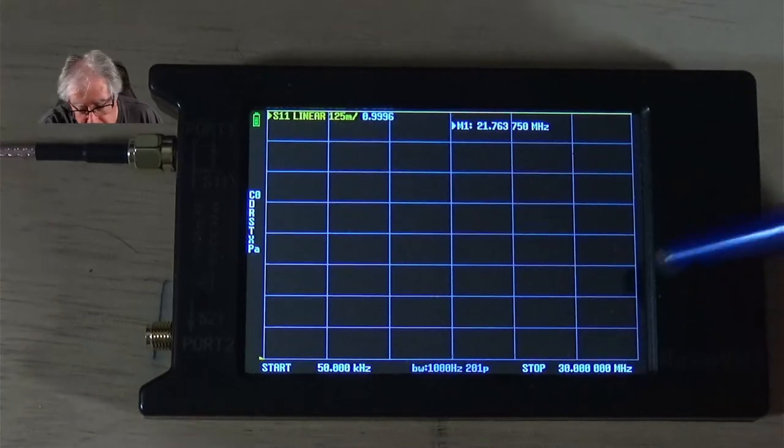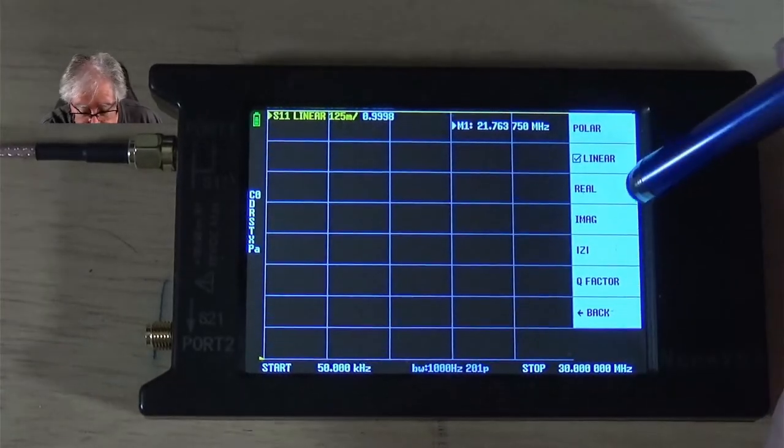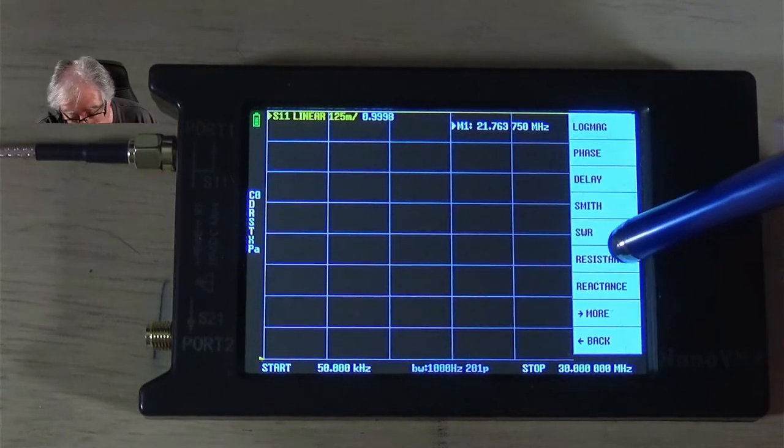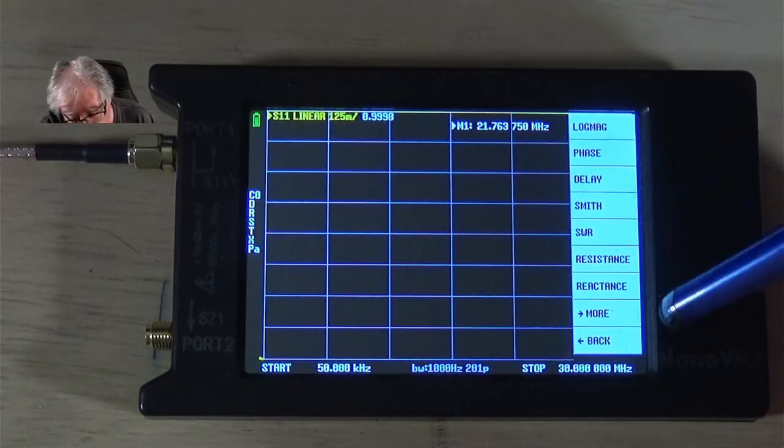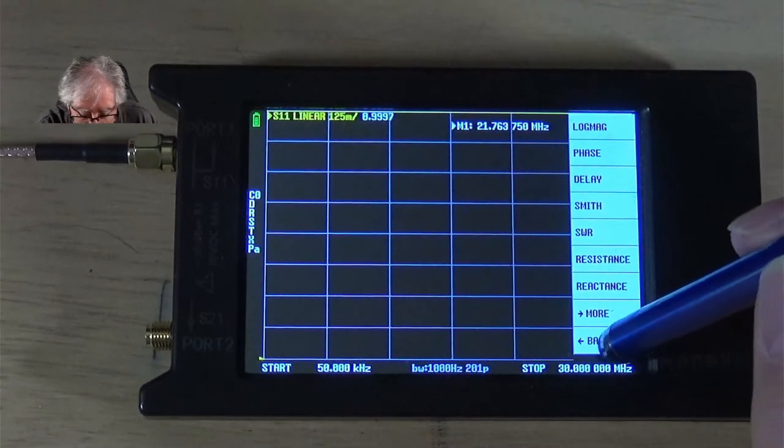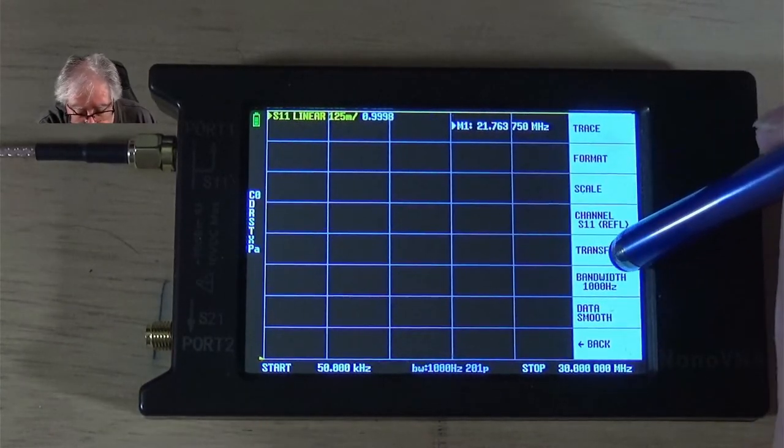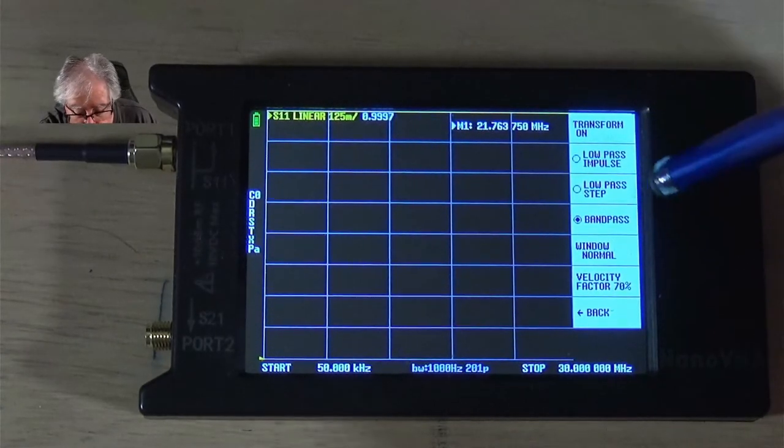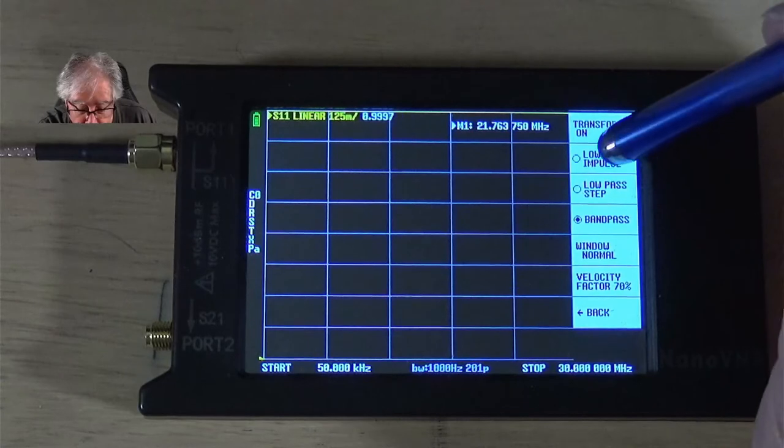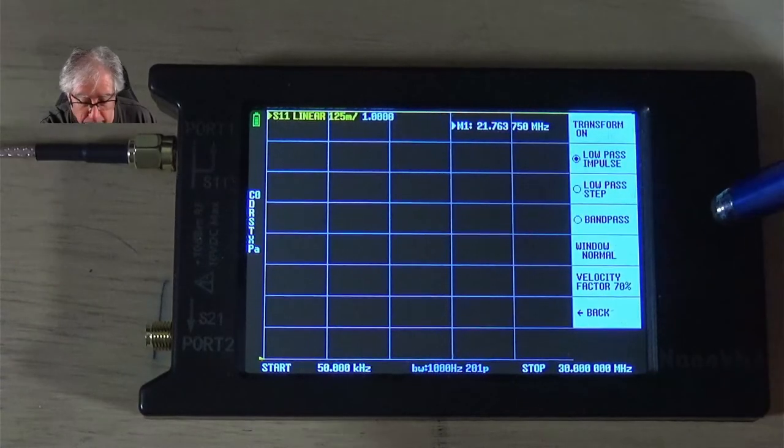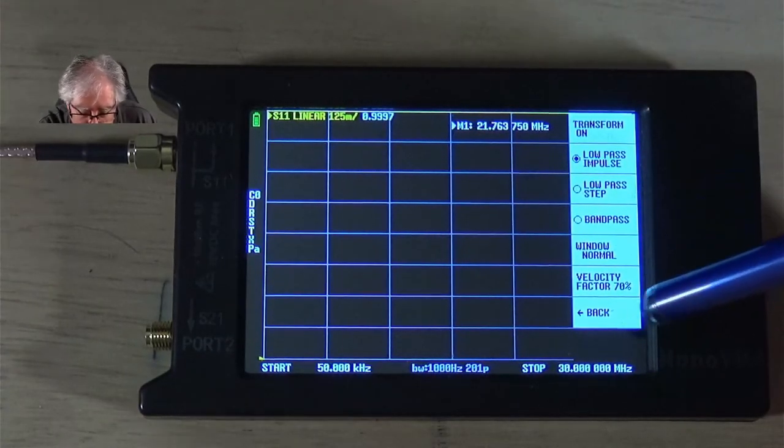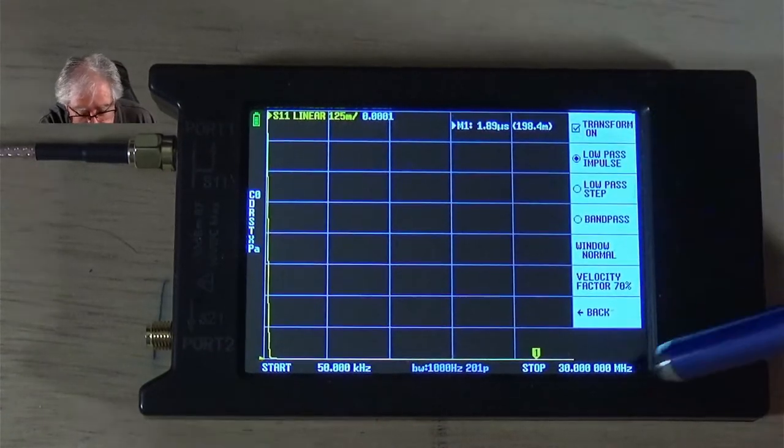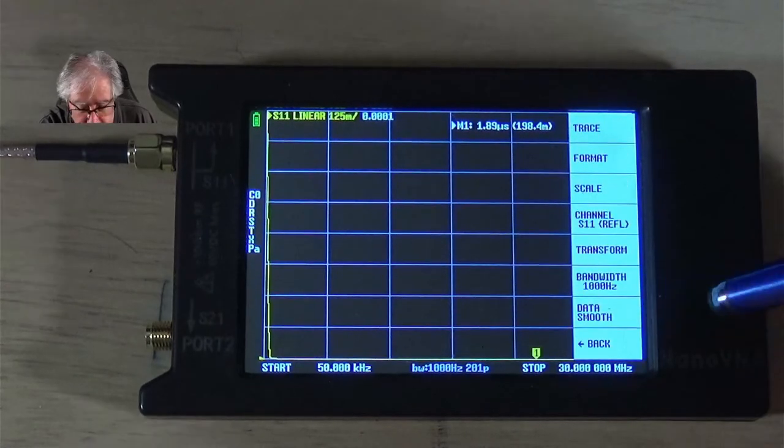But, I am going to change its format, and I am going to go down here to more, and I am going to select linear. And then, let's go back in, and I am going to tell it that this is going to be, and I always seem to have trouble finding this on, there we go. So, I am going to go into transform. So, I went all the way back to that first menu. I am going to go to transform, and I am going to change it to low pass impulse. And then, let's go ahead and turn on the transform.